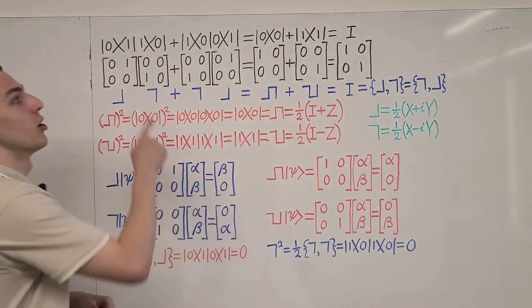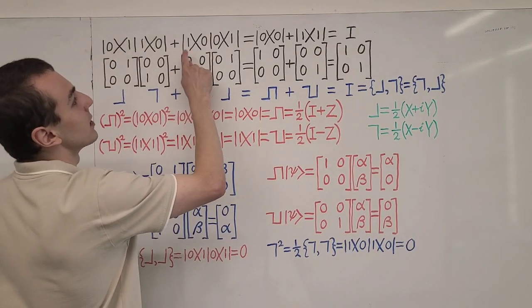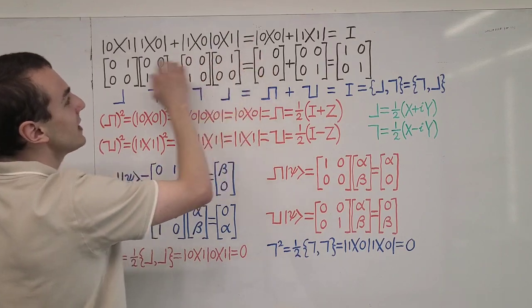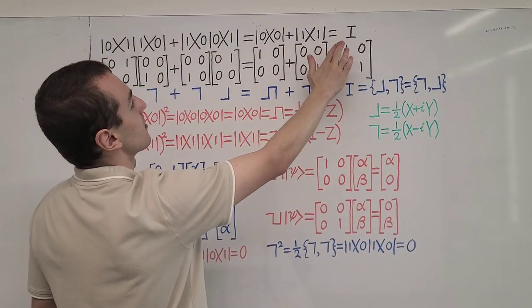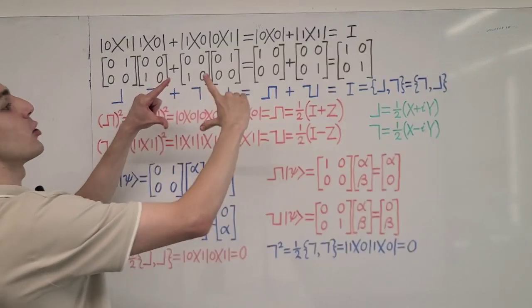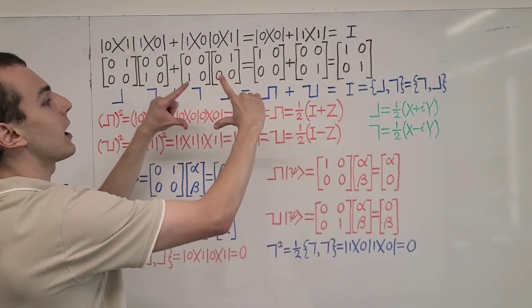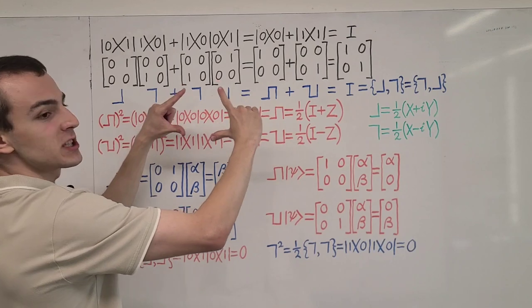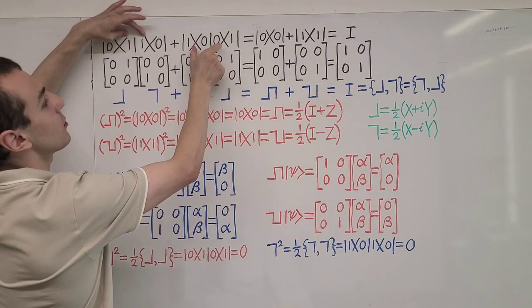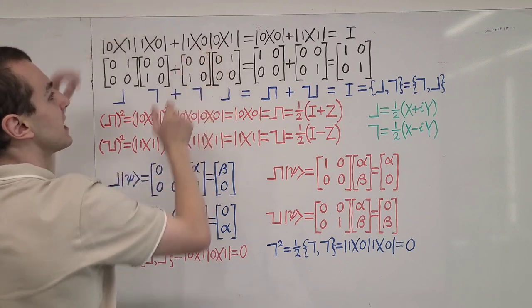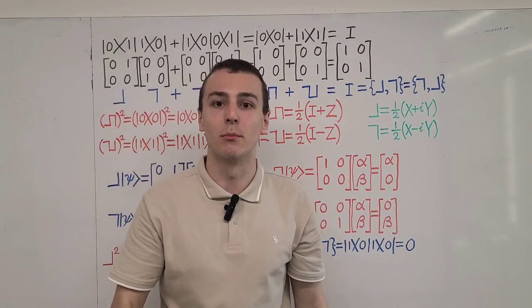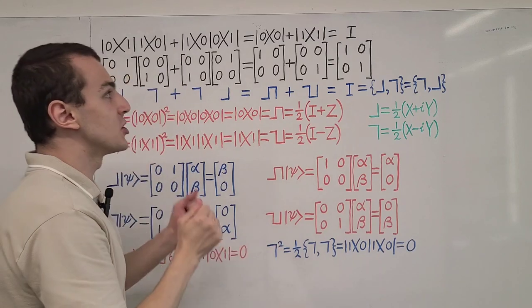In the first line over here, you can see this bra-ket notation. This is Dirac's bra-ket notation — anytime you see a combination where it's bra followed by ket, that is a bra-ket. This denotes an inner product. Here we have an inner product and an inner product, and inner products can be evaluated to give a complex number. So this inner product is just a number.